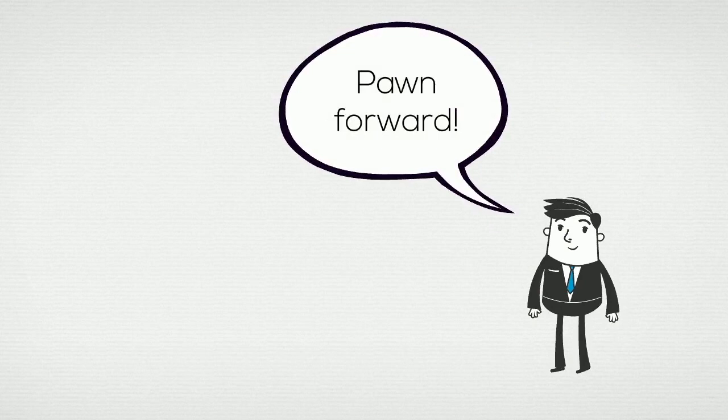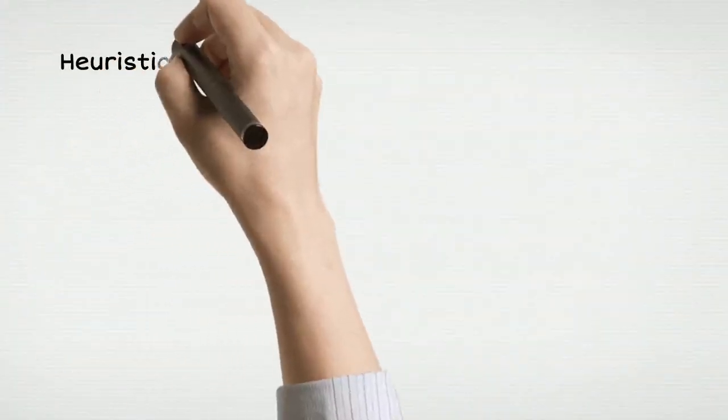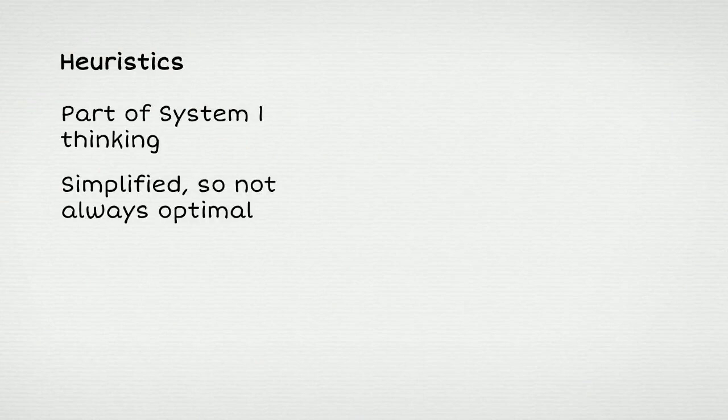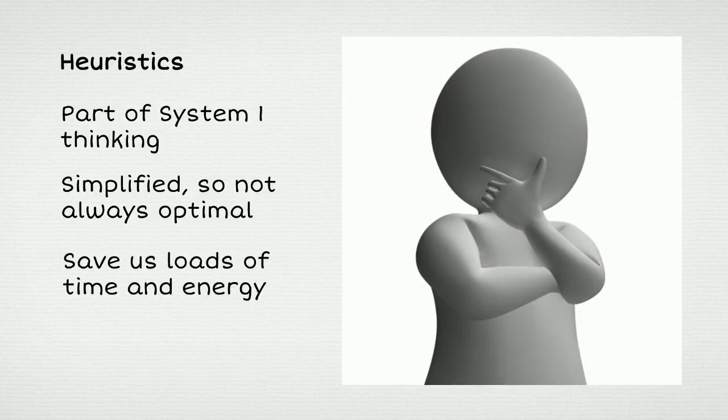These simplified rules are called heuristics. Heuristics are a part of System 1 thinking. The thing about heuristics is yes, they are simplified and so in some cases they will lead to decisions that are not optimal or not completely rational. That's the bad thing about heuristics.